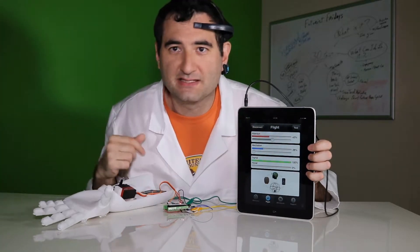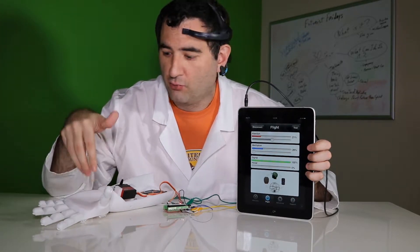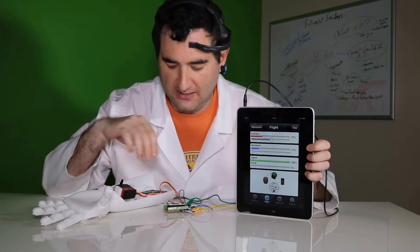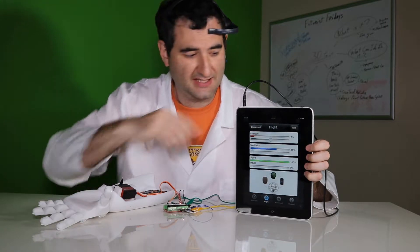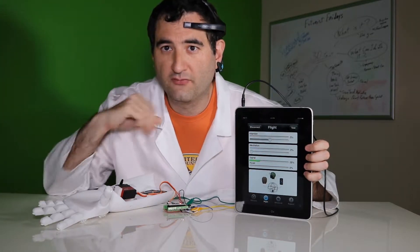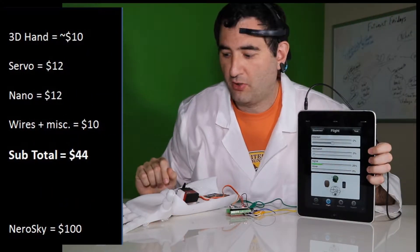This is amazing stuff, guys. This is a $50 robotic hand with all this electronics already. All this stuff that's on this table, besides the iPad and the Neurosky, we're under $50. Let's look over here and I'll show you the list of the components that we bought.